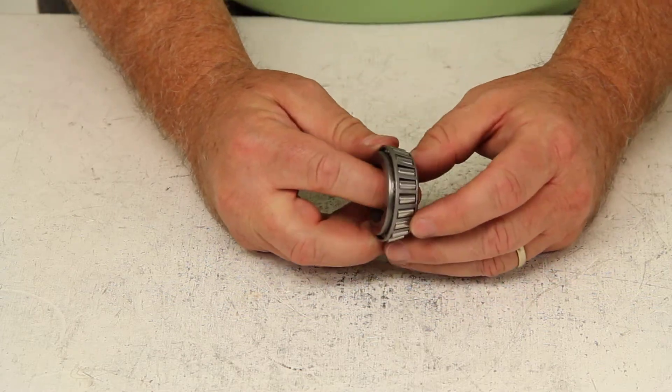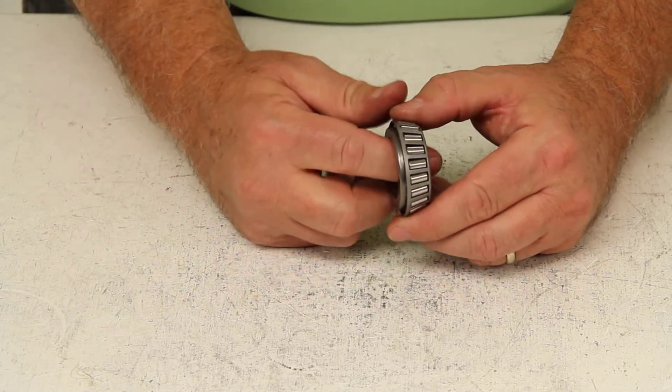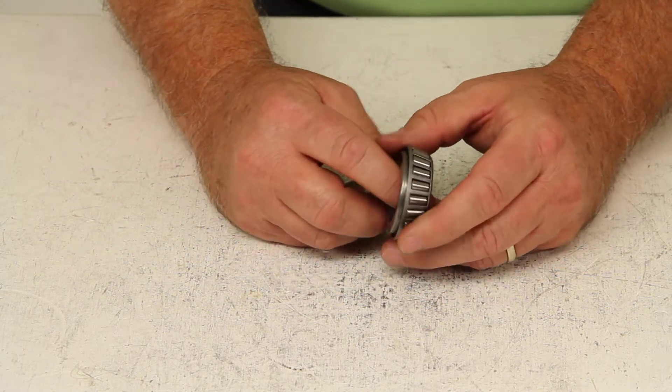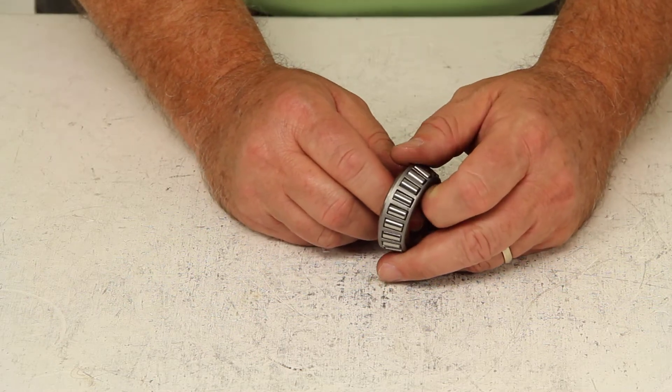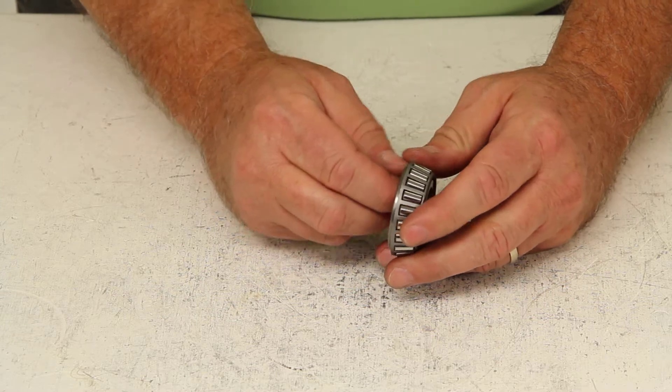Now there is one other piece that is required and that is the bearing race that the bearing would sit into and rotate in. For this part number, you would need to use bearing race part number L44610. That is sold separately.